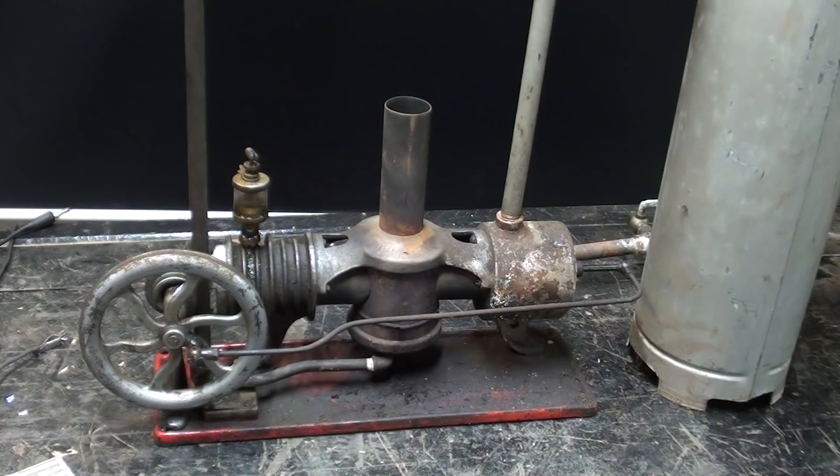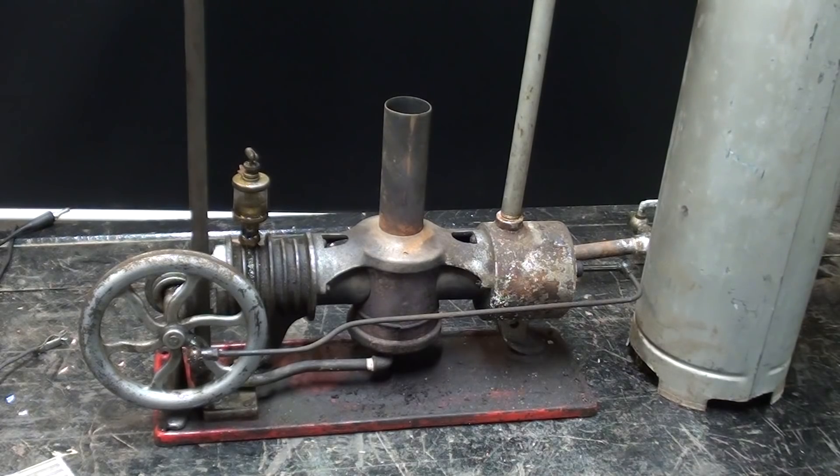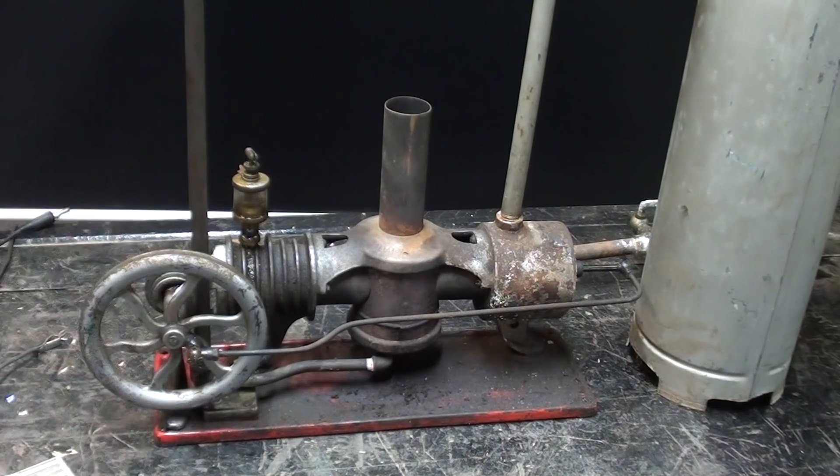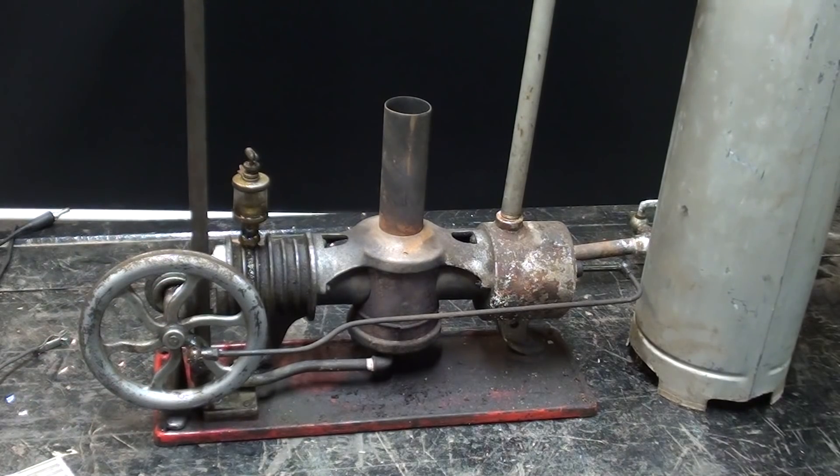You ever hear of a little Fairmont gasoline engine? They were used on hand cars. And they were two-stroke engines and they were reversible. If you wanted to reverse the direction of the hand car, you turned the engine off and restarted it in the other direction, which I thought was kind of unique. Anybody know what this is? Or know more about it than what I do is what I actually want.